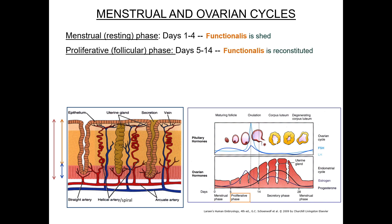The proliferative, or estrogenic, or follicular phase is from days five through fourteen. During this time, the cells in the lamina propria and glands in the basal layer will proliferate in response to estrogen from the ovarian follicles, and thus reconstitute the functional layer of the endometrium. This phase ends when ovulation occurs.